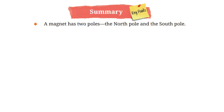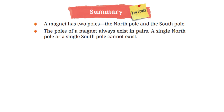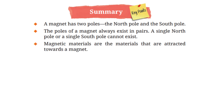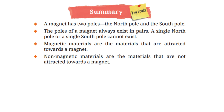Let's quickly recall some key points from the chapter. A magnet has two poles — the north pole and the south pole. The poles of a magnet always exist in pairs; a single north pole or a single south pole cannot exist. Magnetic materials are attracted towards a magnet, and non-magnetic materials are not attracted towards a magnet.